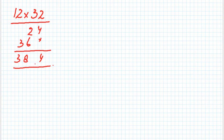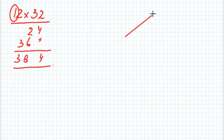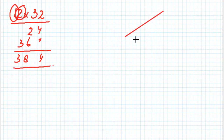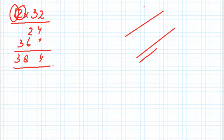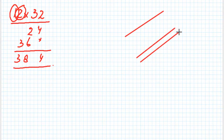Here's the smart way. For the number 12, we have 1 as the first digit — just draw one line like this, a single line. Then we have 2 as the second digit of the same number, so there are two lines drawn in the same direction but at some distance. Then for the second number 32, first draw three lines in the next direction.